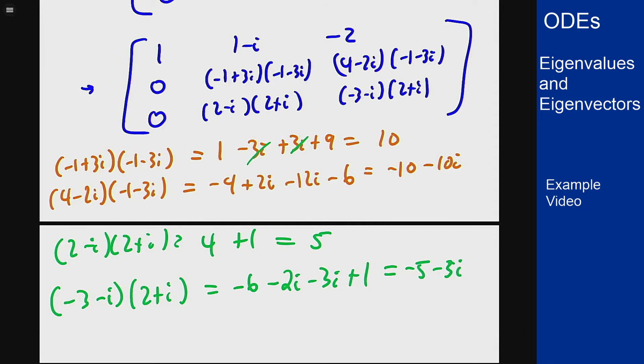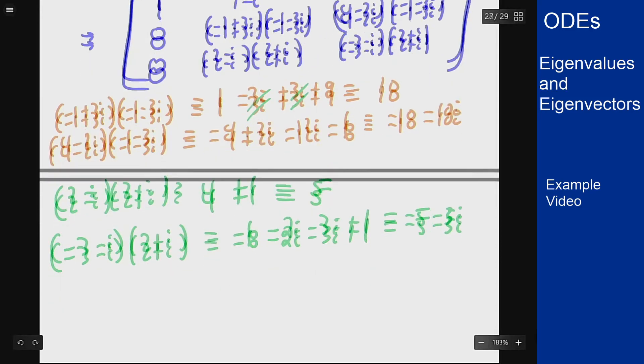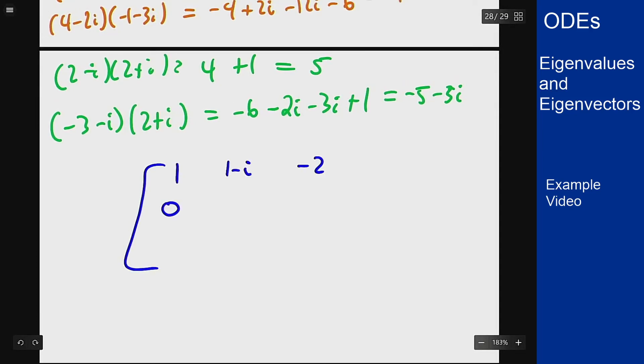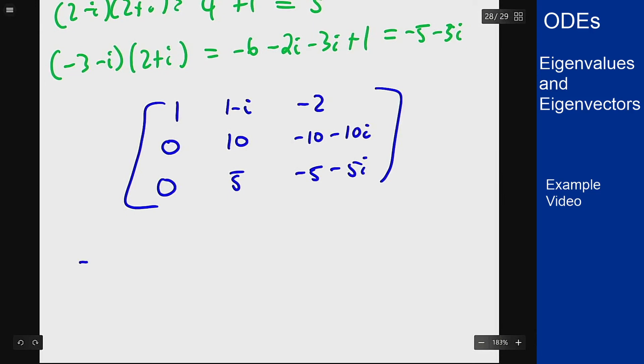You can see what's happening here. If I rewrite these out I get the following. Top row is the same. This row becomes 0, 10, -10 minus 10i. Bottom row: 0, 5, -5 minus 5i. These equations are now the same. I can row reduce down then divide the second row by 10 to get: 1, 1 minus i, -2; 0, 1, -1 minus i; 0, 0, 0.